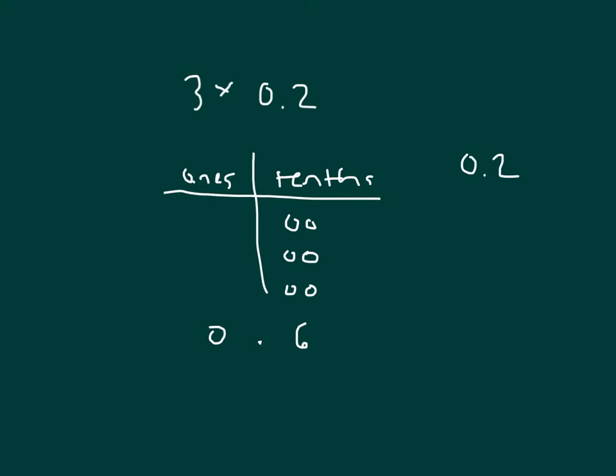With our numbers, I write out 2 tenths, multiply it by 3. 3 times 2 is 6, and then we place our decimal point.